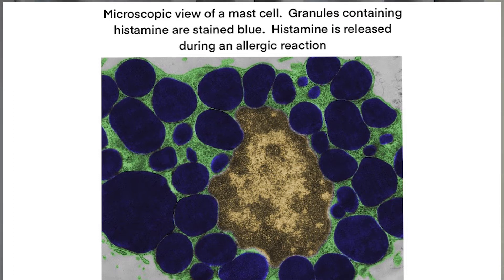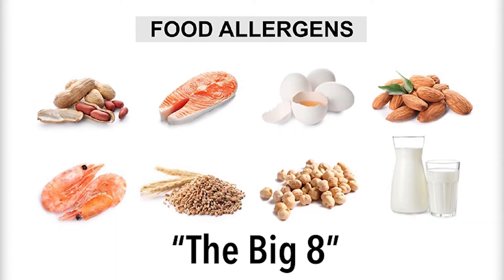These symptoms are often unpredictable and can become severe, which is a condition known as anaphylactic shock. This type of food allergy is estimated to affect 5-10% of adults. The most common food allergens are known as the Big 8: milk, eggs, fish, shellfish, tree nuts, peanuts, wheat, and soy. These foods account for approximately 90% of all food allergies in the U.S. and must be labeled on any processed food according to U.S. law.